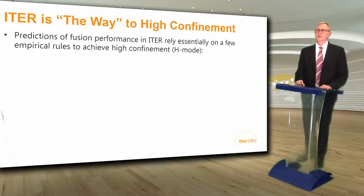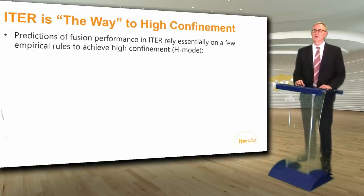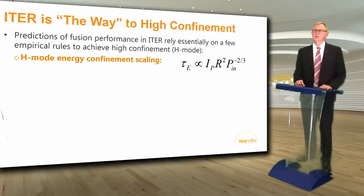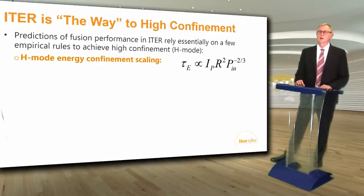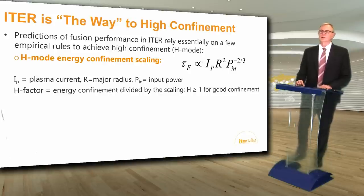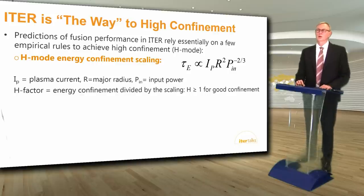ITER is Latin for 'the way' because it's the way to high confinement. Predictions of fusion performance in ITER rely on empirical rules to achieve high confinement called H mode. The H mode energy confinement scaling shows tau E is larger for higher plasma current IP and larger radius R of the plasma, but decreases with larger input power PN. The H factor is defined as the energy confinement time divided by this scaling, and H needs to be greater than or equal to one for good confinement. This is one of the main rules that determines the large size of ITER.